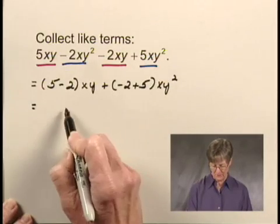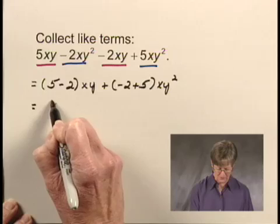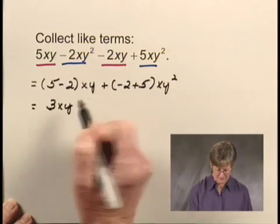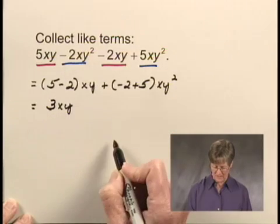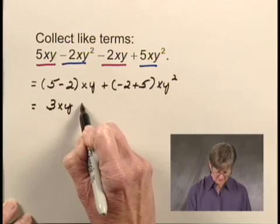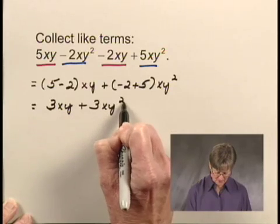And now I just do the additions and subtractions. 5 minus 2 is 3, so I have 3xy, and negative 2 plus 5 is 3, so I have plus 3xy squared, and now we've collected the like terms.